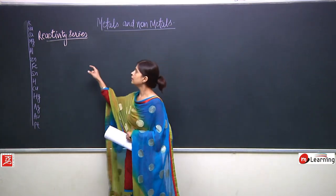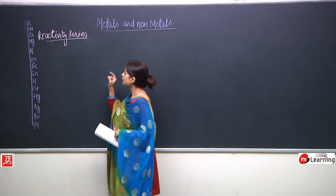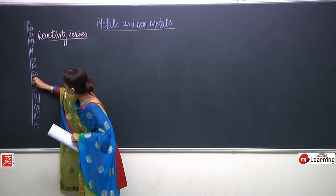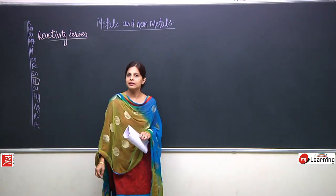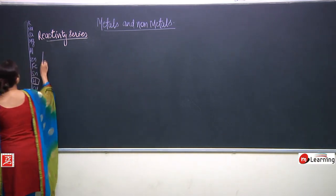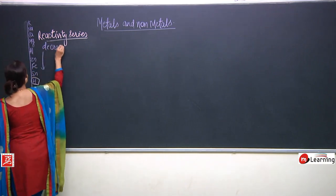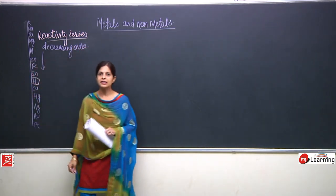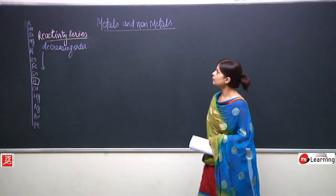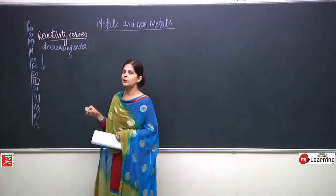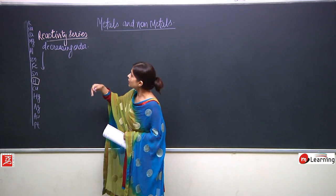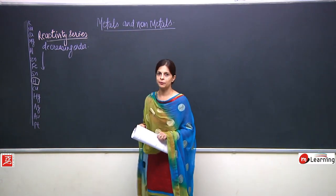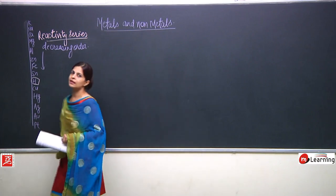This is known as the reactivity series, in which we have written the names of metals in decreasing order of reactivity. That means potassium is the most reactive, then sodium, then calcium — reactivity is decreasing. Magnesium is lesser than calcium, aluminium is lesser reactive than magnesium, zinc is lesser than aluminium. This is what is known as the reactivity series.